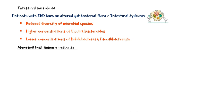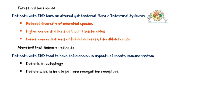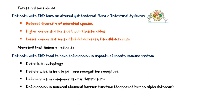Abnormal immune response also plays a major role in inflammatory bowel disease. Patients with IBD tend to have deficiencies in aspects of the innate immune system, such as deficits in autophagy, deficiencies in innate pattern recognition receptors, deficiencies in components of inflammasomes, and deficiencies in mucosal chemical barrier function. These defects in the innate immune system lead to an exaggerated adaptive immune response against intestinal microorganisms.